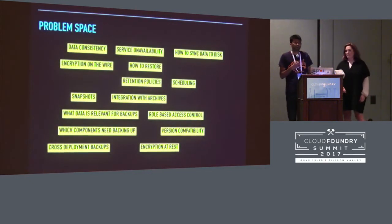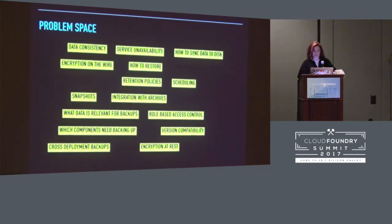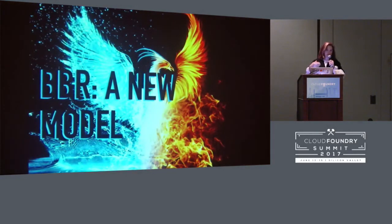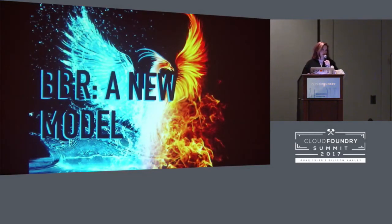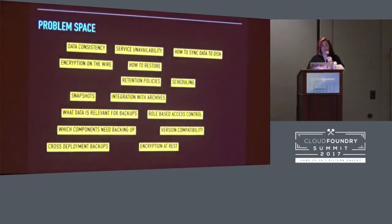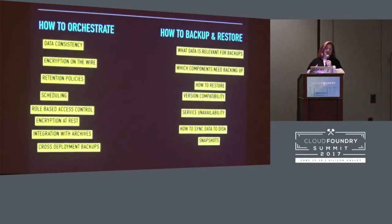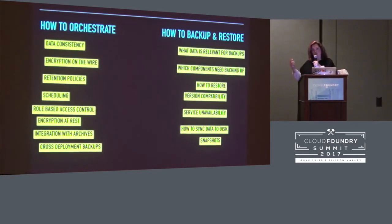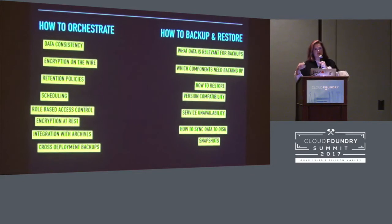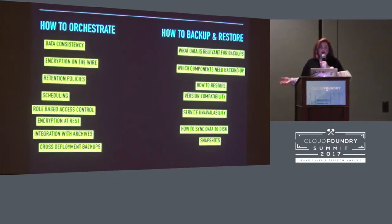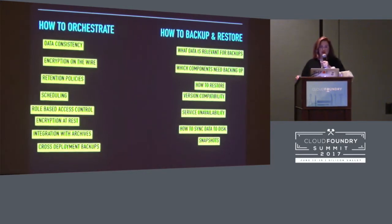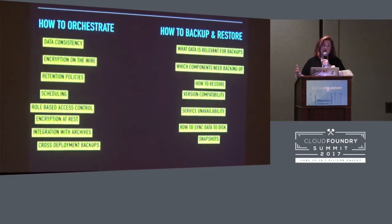Therese will take us through how we have been solving this problem. We took everything we learned — a lot of customer research and research into current solutions — and we came up with a new model of backup and restore to try to address the issues we found. We divided the issues into two categories. On one hand, there's how to orchestrate the backup — that includes concerns around consistency across backups, encryption, scheduling, artifact management, and things like that. The other category is how to actually do the backup and the restore — things like database versions, what data needs to be backed up, and what is the correct procedure for a backup or restore.